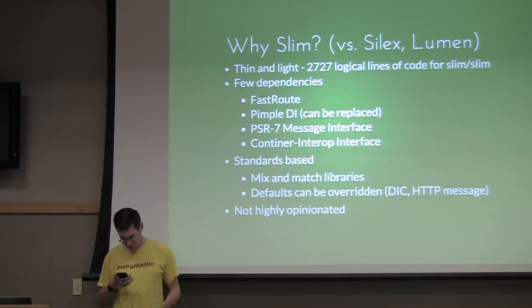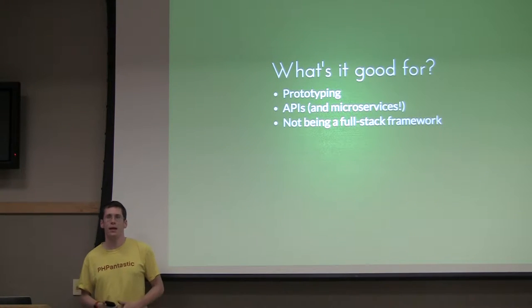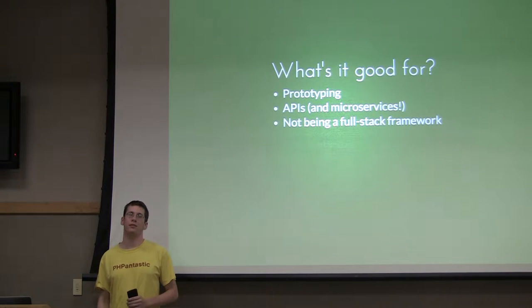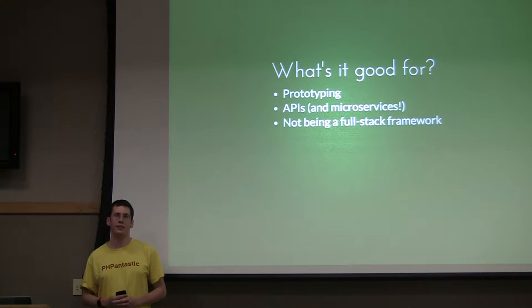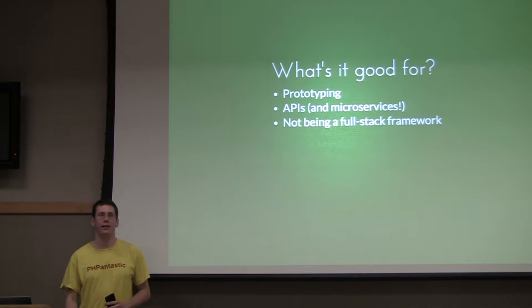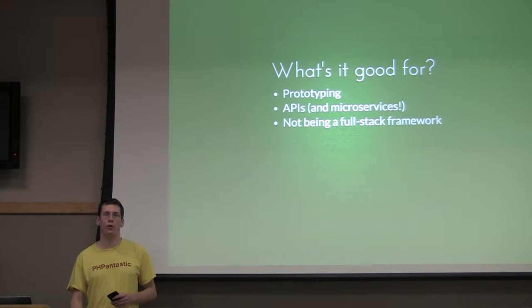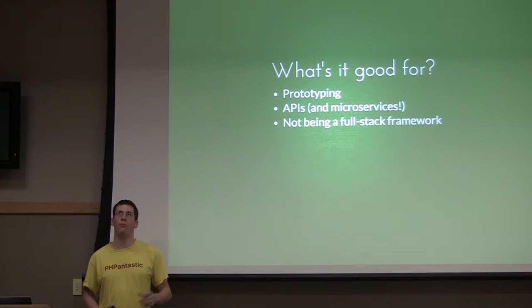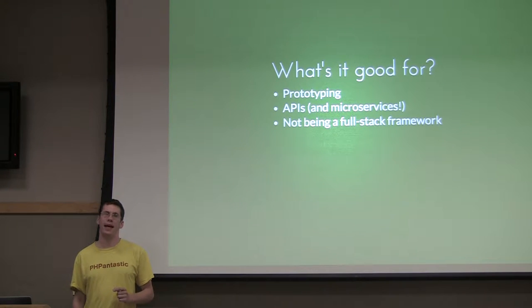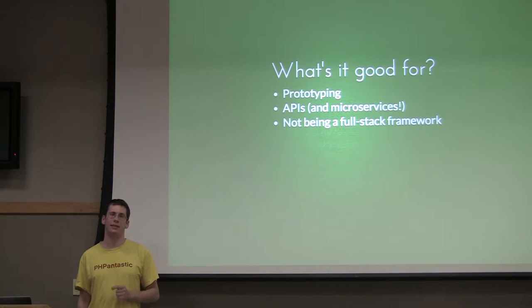SLIM also allows you to only pick the pieces that you need — notice the very small list of dependencies. If you install it via Composer, you will see those very few dependencies fly down your internet connection very quickly. SLIM is particularly good for getting something out the door rather quickly. Not super ridiculously quickly because it doesn't have CRUD generation — it's not Rails. But for a quick proof of concept or a full-on API where you really want just something to say, I want this HTTP route to map to this given action, SLIM lets you do that very quickly and easily.